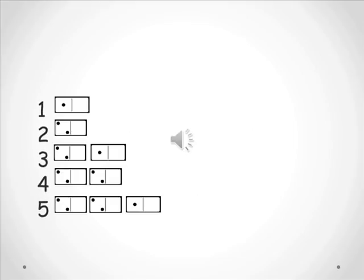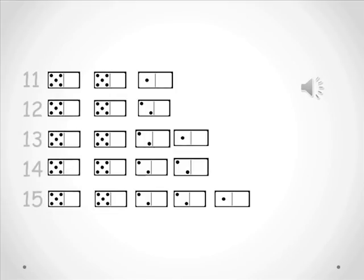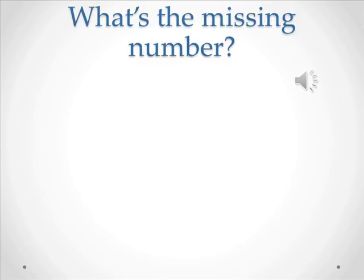1, 2, 3, 4, 5, 6, 7, 8, 9, 10, 11, 12, 13, 14, 15, 16, 17, 18, 19, 20. What's the missing number?